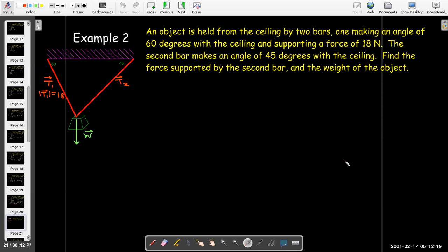In our second example, we have a weight that's hung from the ceiling by two bars. We know the force in one of the bars is 18 newtons. That bar makes a 60-degree angle with the ceiling. We don't know the force in the other bar, but that bar makes an angle of 45 degrees with the ceiling. And we don't know what the weight is, but the weight is pulling straight down. We'd like to find the force in the second bar, and the weight of the object.